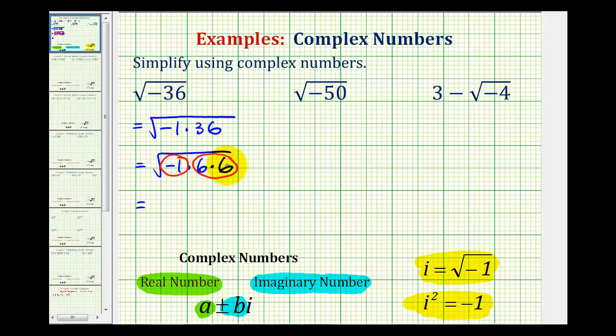So the square root of 6 times 6, or 6 squared, would be 6, and the square root of negative 1 is equal to i. So this simplifies to an imaginary number, 6i.